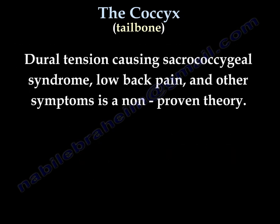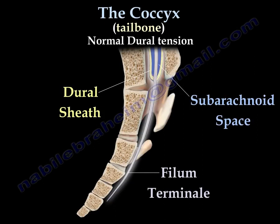The dural tension causing sacro-coccygeal syndrome — including low back pain and other symptoms — is an unproven theory, but I will try to explain it. You can see the dural sheath or tube, and distally the filum terminale. Normal dural tension occurs because the filum terminale is connected to the dural tube, allowing smooth movement of the dural tube as the coccyx moves normally.